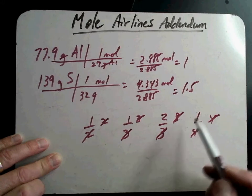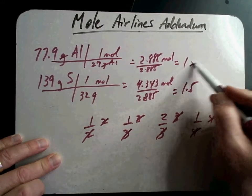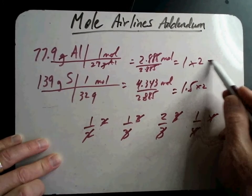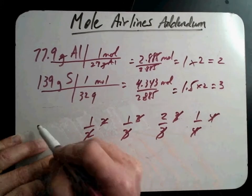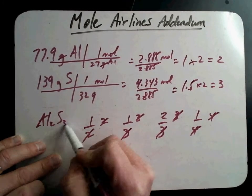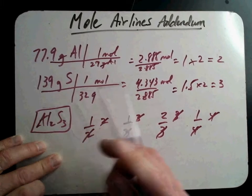Okay, so in this case, since it's a half, I multiply both by 2. My answer would be 2 and 3. And so my formula would be AL2S3. And there's my answer. Okay, that's easy to do.